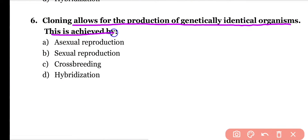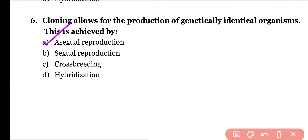Question number six: The cloning process allows for the production of genetically identical organisms. This is achieved by asexual reproduction, sexual reproduction, crossbreeding, or hybridization. Correct answer is option A. Clones are produced through asexual reproduction and all clones are genetically identical organisms.